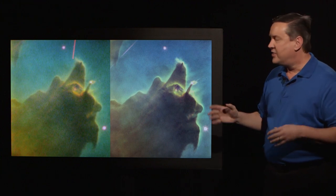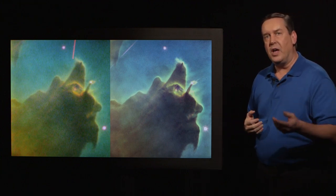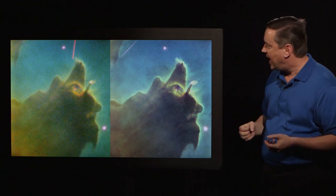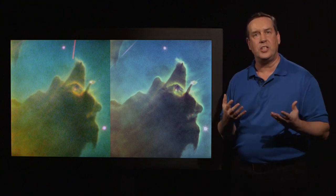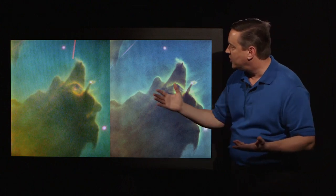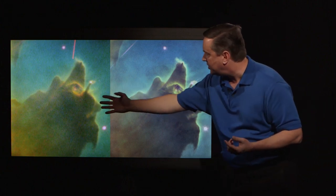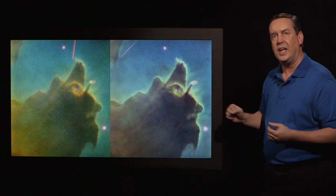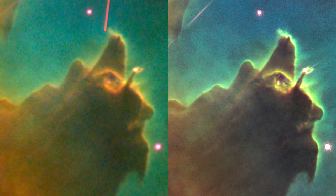This region is in the middle of the tall pillar on the left, and here the resolutions of the detectors are different. So you can see a fuzziness in the old image and a clearer view in the new image.